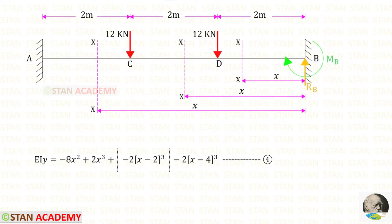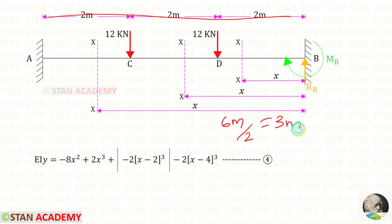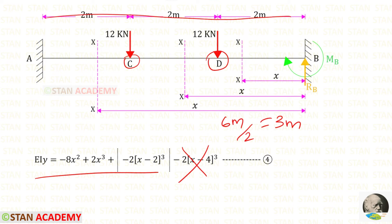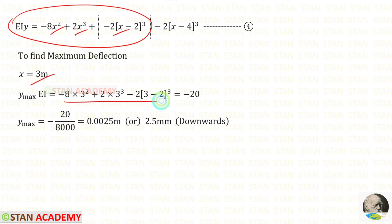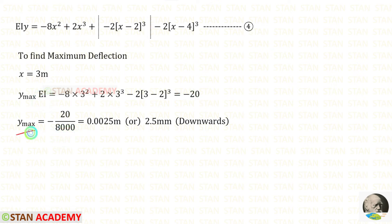Now we are going to find the maximum deflection. In this beam we have symmetrical loading, so the maximum deflection will occur at the center. The total length is 6 meter, so 6 divided by 2 gives 3 meter — the center. The maximum deflection will occur between points C and D. We should not consider the last Macaulay bracket term since it is only applicable beyond point C. Substituting X=3 into the deflection equation we get minus 20. Dividing by EI (which is 8000) gives the maximum deflection. The negative value means the deflection occurs downwards.